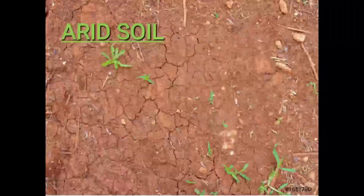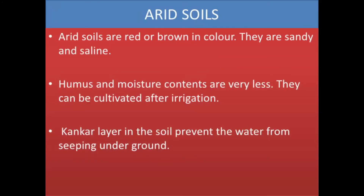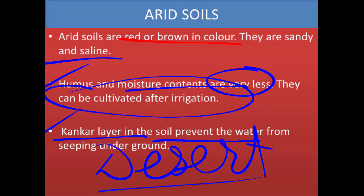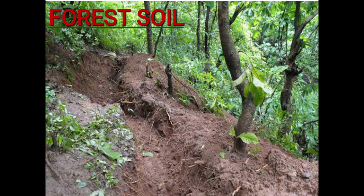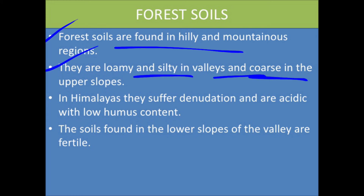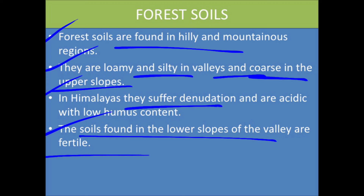The fifth type is arid soil, which is red-brown in color. It is sandy, and humus and moisture contents are very low. It can be cultivated after irrigation. The kankar layer in the soil prevents water from seeping deeper. Arid soil is found in desert regions, basically western Rajasthan. The sixth type is forest soil, found in hilly and mountainous regions. It is loamy and silty in the valleys, and coarse on the upper slopes. In the Himalayas the forest soil is found in mountainous and hilly areas, and this soil is very fertile.